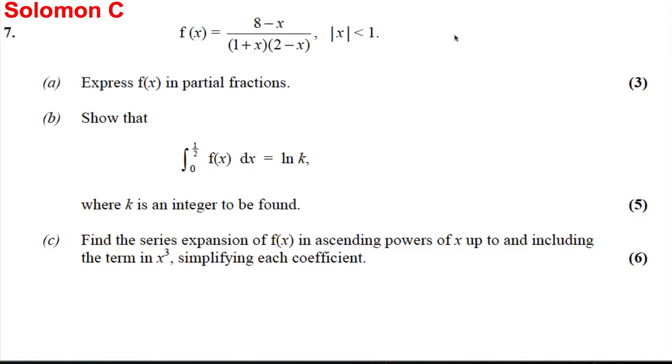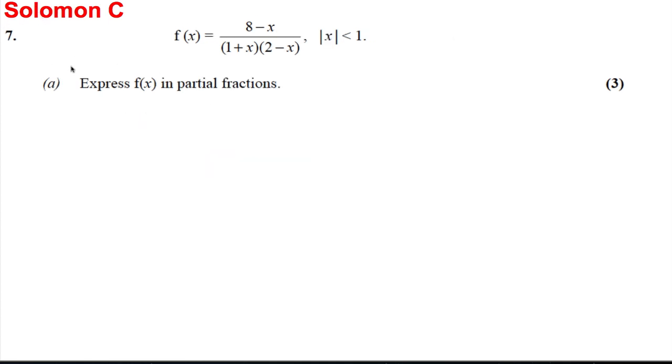This is the last question we're doing on partial fractions. It includes everything we've talked about to date: expressing something in terms of partial fractions, using that to do an integration, and using that to do a series expansion. Let's start with part A. We want to express the following in partial fractions: 8 subtract x over 1 plus x times 2 subtract x. And we know it's going to be in the form a over 1 plus x plus b over 2 subtract x.